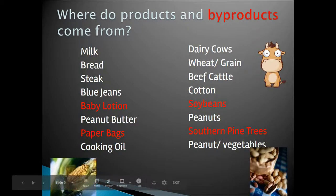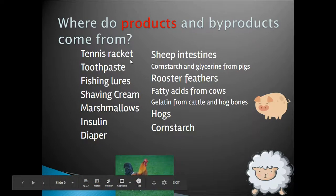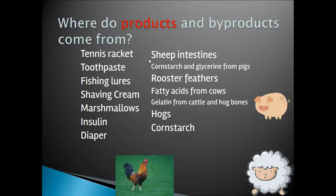Again, we don't kill the tree simply to make a paper bag. If we look at our next list, products are now listed in red and we have none. Originally, tennis rackets were made from sheep intestines, though often now artificial string is used.